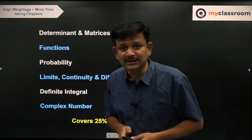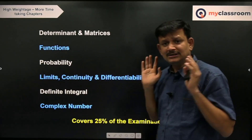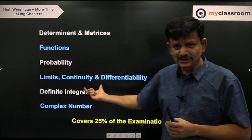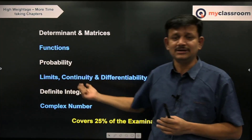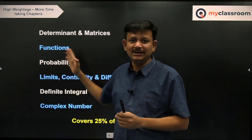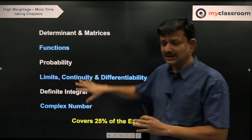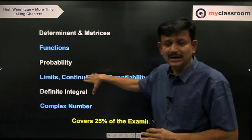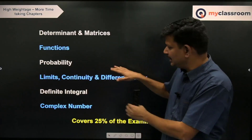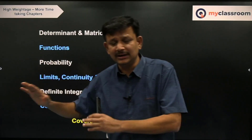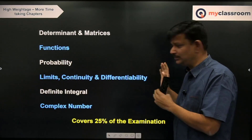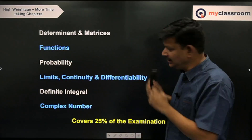Limits, Continuity, and Differentiability is a little time-consuming but will yield a decent set of questions. On continuity, standard simple questions can be done in less than 30 to 40 seconds — do not ignore continuity and basic limits. Higher-level limit questions can be ignored if pressed for time; basic limits with continuity will give 90% assurance. Differentiability is also a simple concept — do not be confused by it.